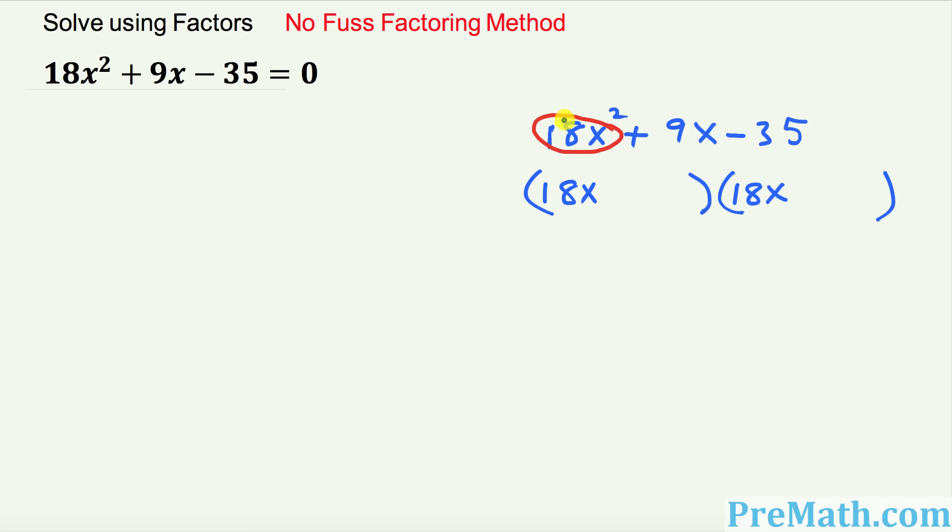Next step I want you to multiply these end numbers which is what? 18 and 35. I want you to write down just these 18 and 35 right up here. 18 times 35. You can multiply these ones and then you can factor them out to get this 9 right now. You can see we need a positive 9 in the middle. But the simple way I want you to do like this way.